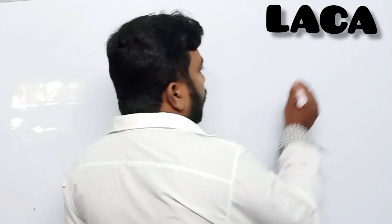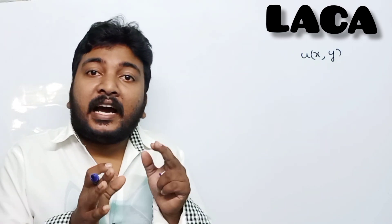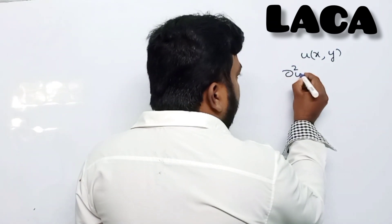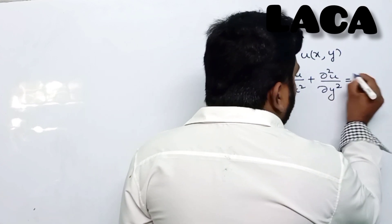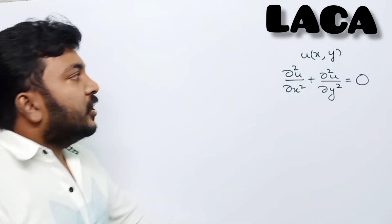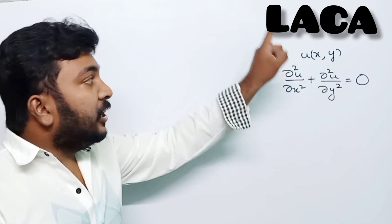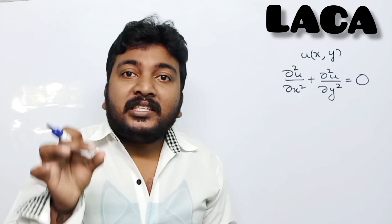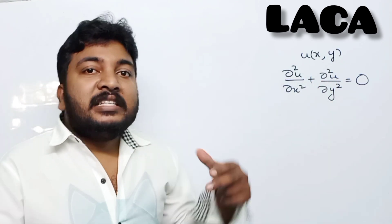U of X, Y — it must satisfy the Laplace Equation. The Laplace Equation is: ∂²u/∂x² + ∂²u/∂y² = 0. So U(x,y) is called a Harmonic Function if it satisfies the Laplace Equation: ∂²u/∂x² + ∂²u/∂y² = 0.